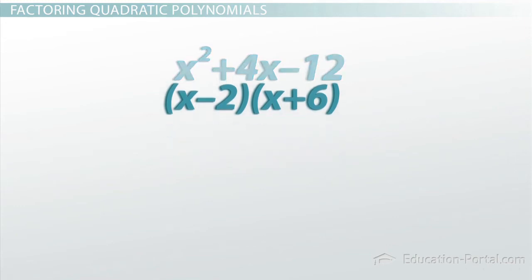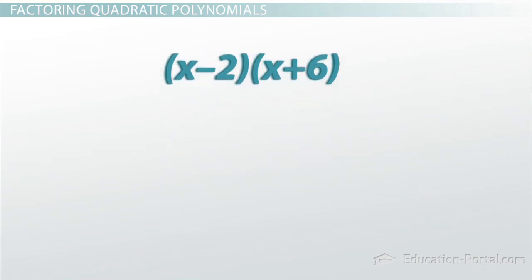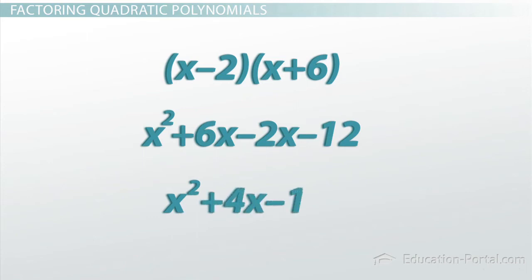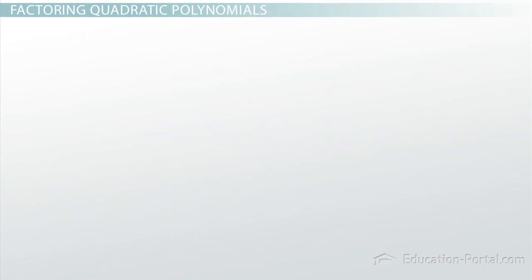Now let's go ahead and check. x minus 2 times x plus 6 is x squared plus 6x minus 2x minus 12, which is x squared plus 4x minus 12.